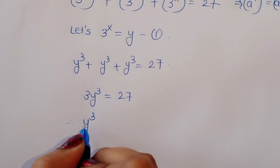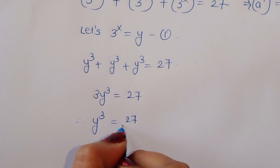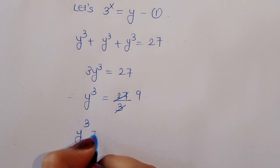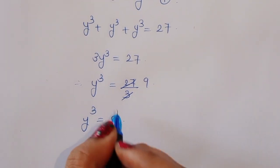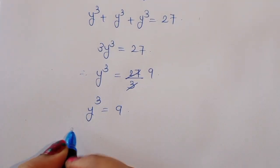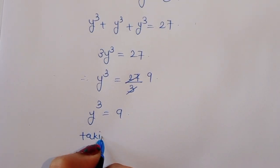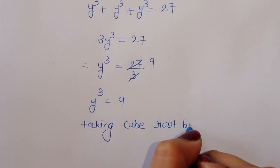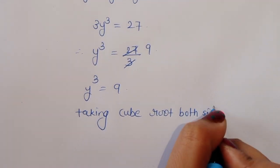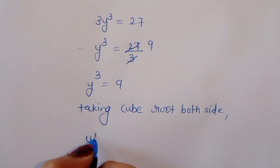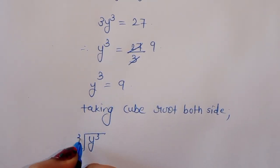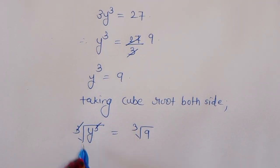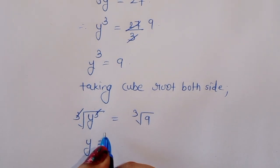Therefore we need to find the value of y. We have 3 times y cubed equals 27, so y cubed equals 27 divided by 3, which gives y cubed equals 9. We need to find the value of y, so we take the cube root of both sides. Taking the cube root of both sides, we get y equals the cube root of 9.